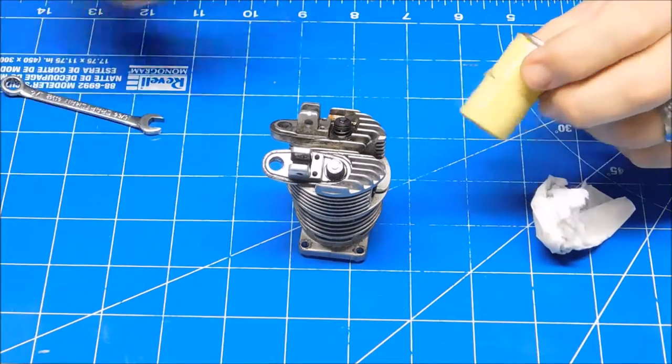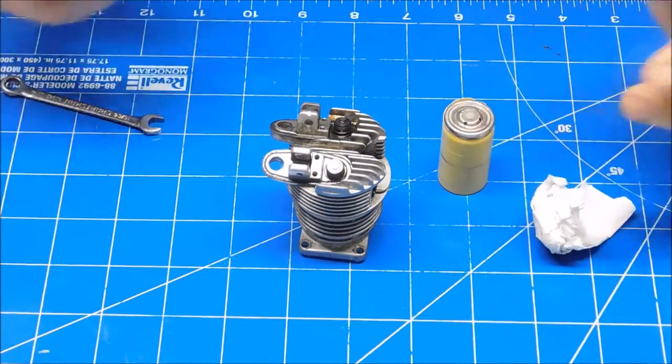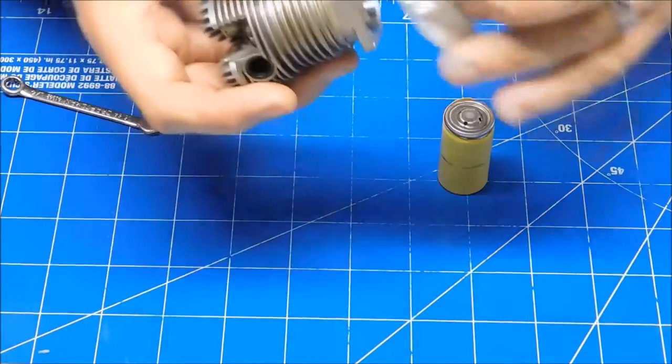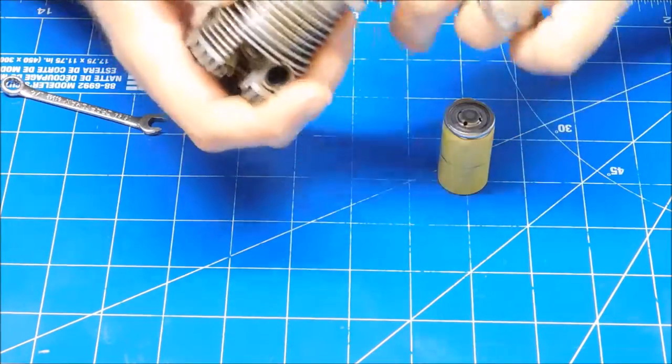What you'll see here is I've got a C-cell battery for my Nye starter and a clean piece of paper towel that I've just wadded up.